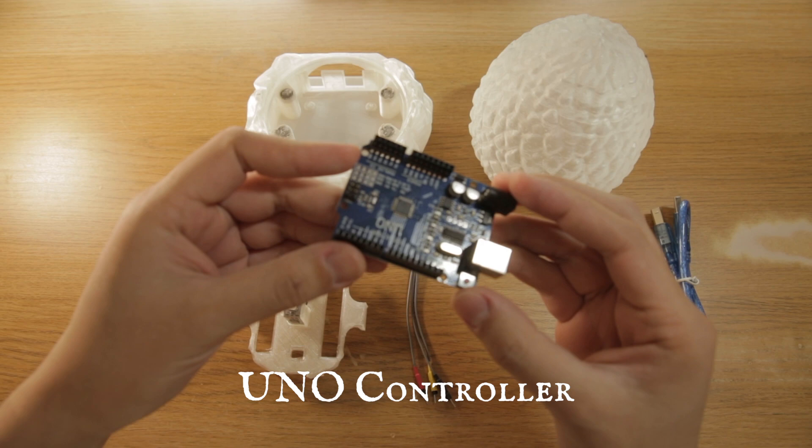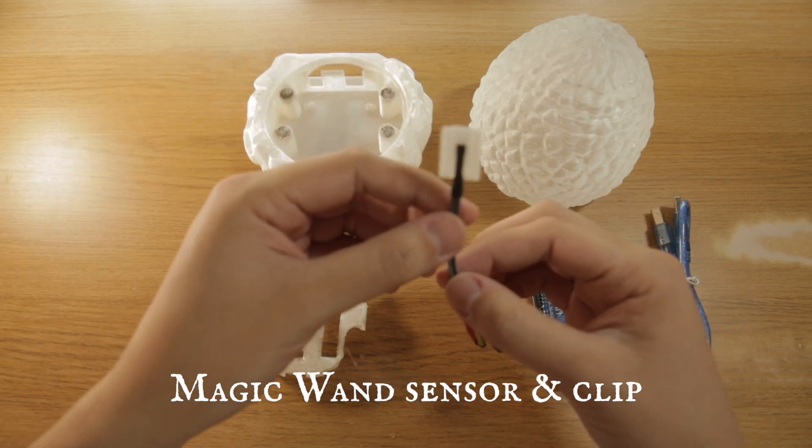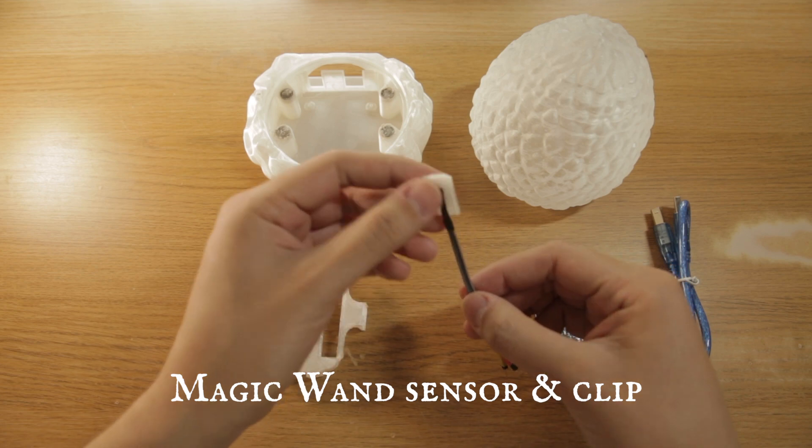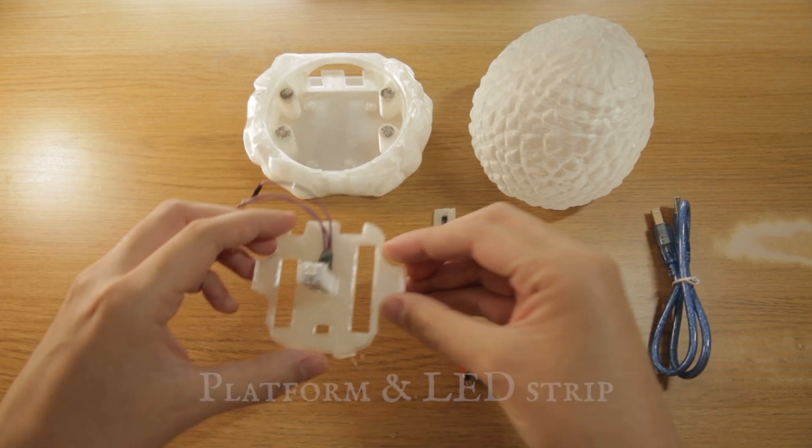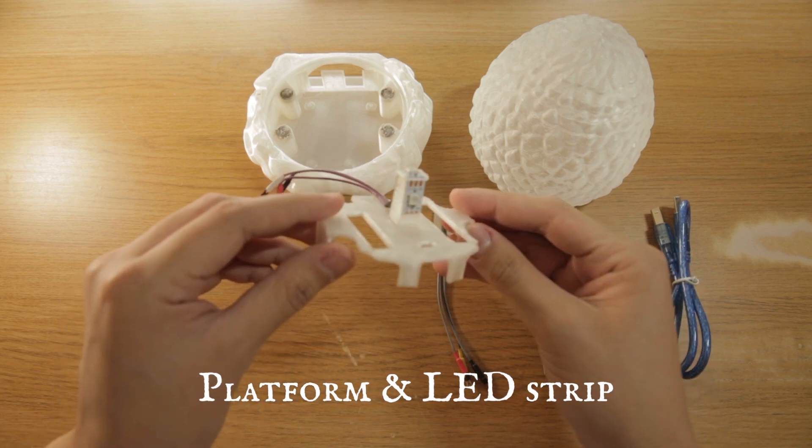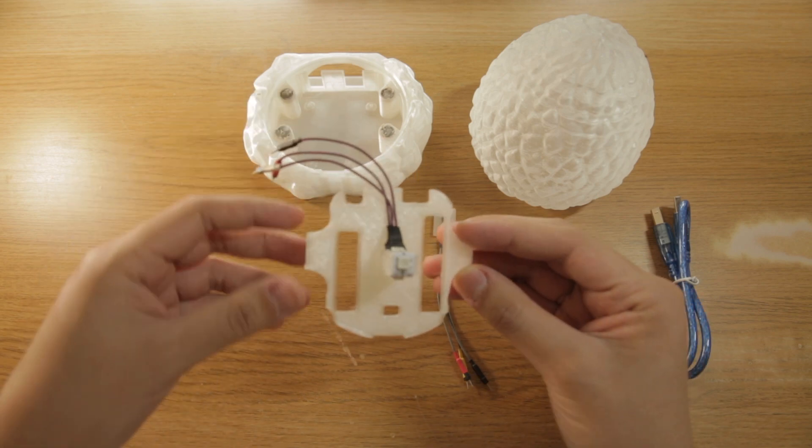The microcontroller, the brains of the operation. This is our magic wand sensor that we've preassembled into the printed clip here. And this is the platform. Attached to it you can see the light strip and these are the wires coming out.